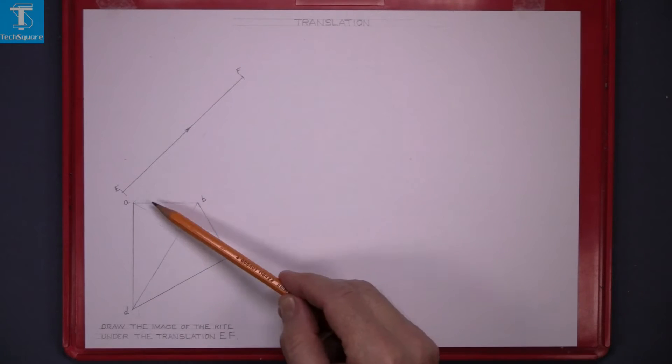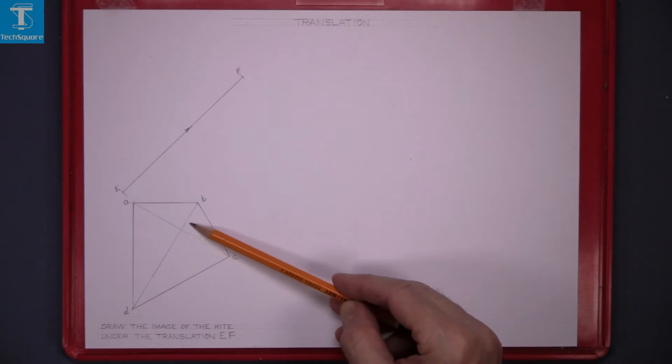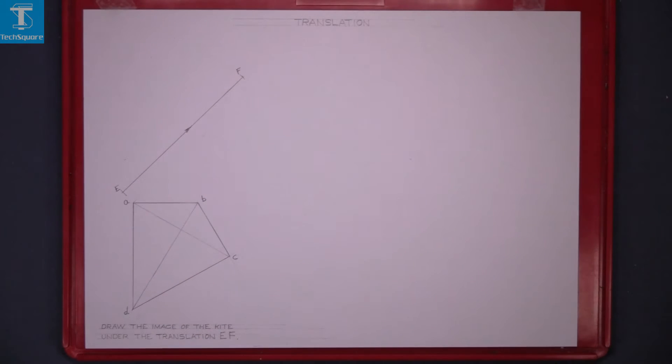We take this figure here and we want to move it under translation EF. Draw the image of the kite under the translation EF.